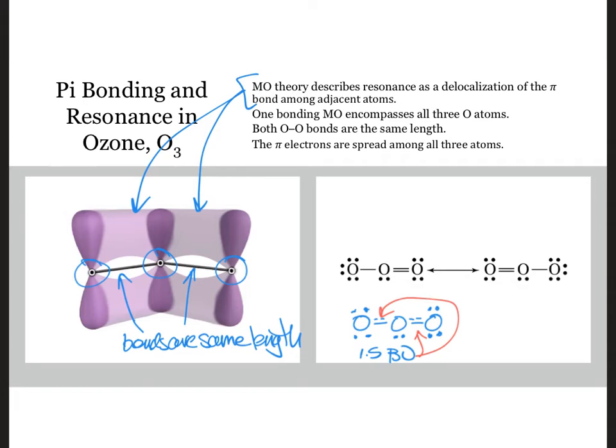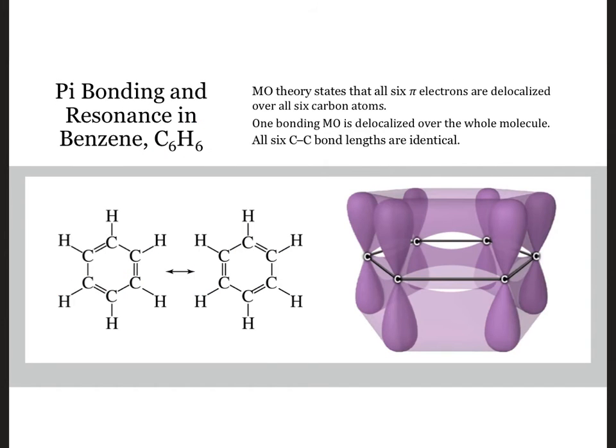Compounds with resonance are generally less reactive than expected based on the number of multiple bonds. We see that MO theory works for larger molecules with resonance too. For example, benzene is generally drawn as a hexagon with three double bonds.